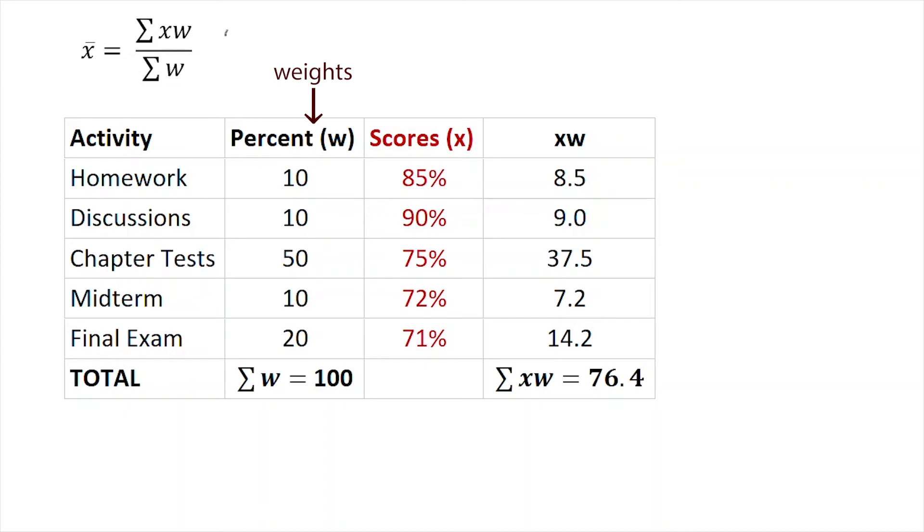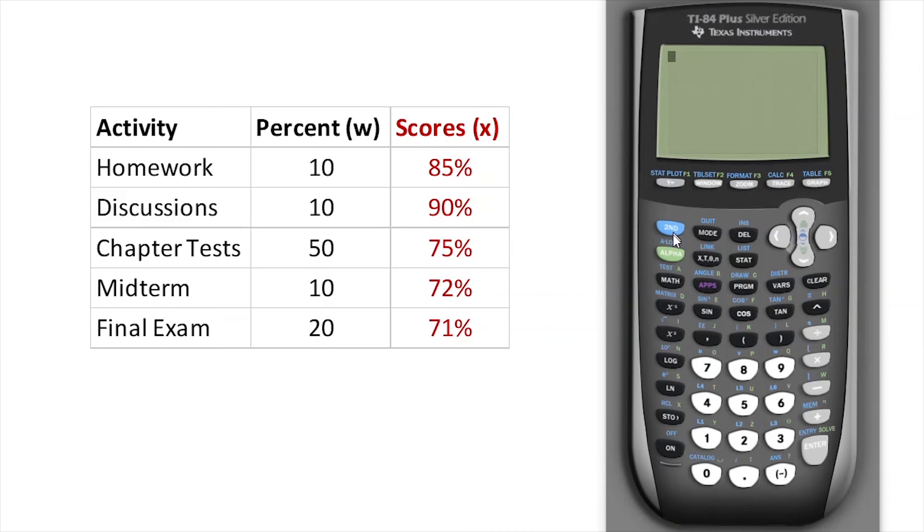In order to find the weighted means, I have to add up all the scores multiplied by the weights. The sum of xw is going to be 76.4, and then I divide that by the sum of all the weights, which in this case will be 100. When I put that into my calculator, I'll see that I get 0.764, and as a percent, that's 76.4%. We can actually do this in our calculator.